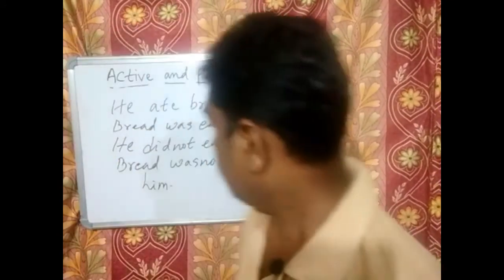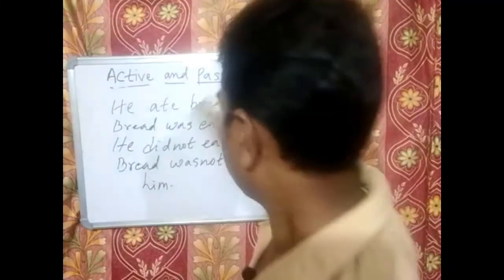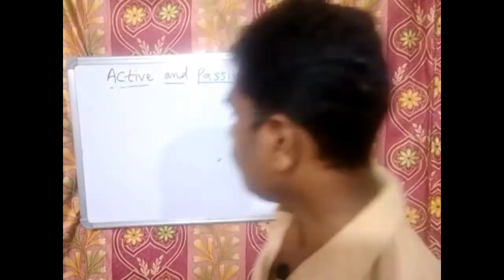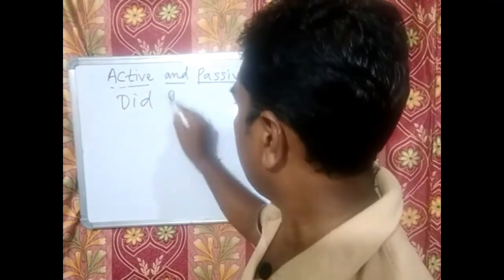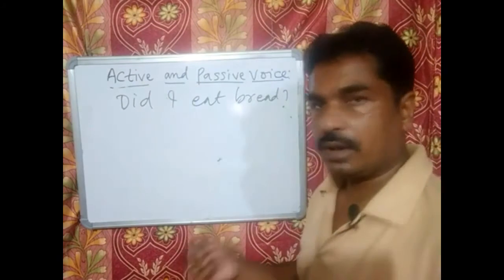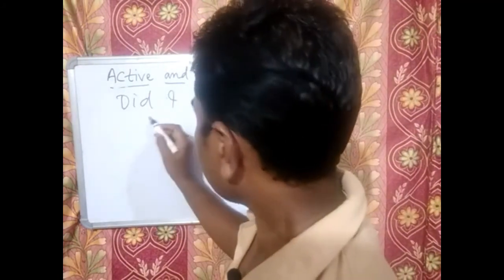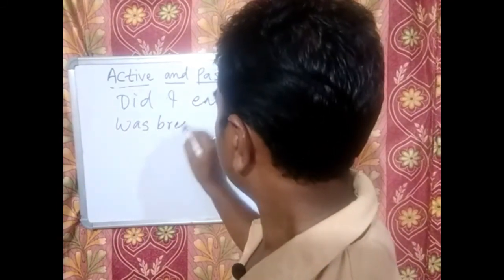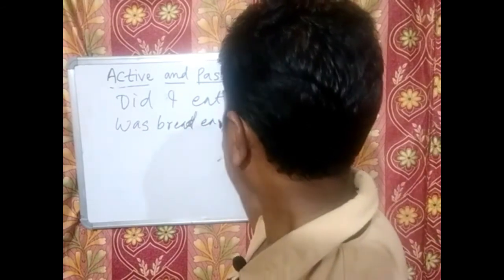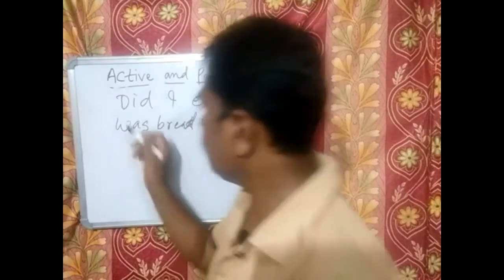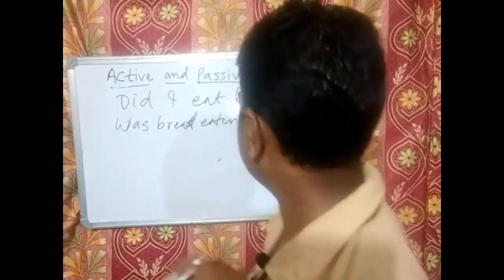Now let us come to interrogative sentences in the past form. For example: 'Did I eat bread?' 'Did' will be replaced by a be-verb. The passive form is: Was bread eaten by me? 'Did' is replaced by 'was.'